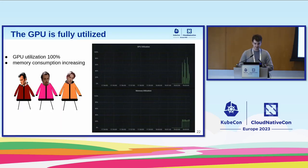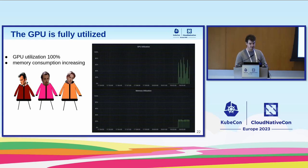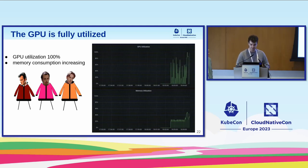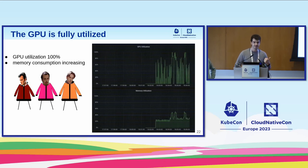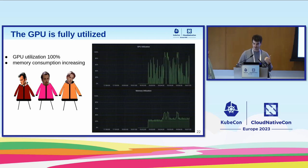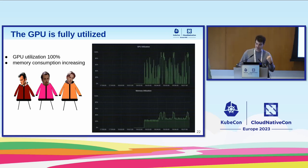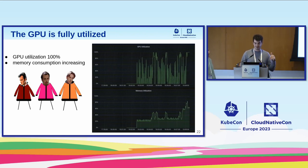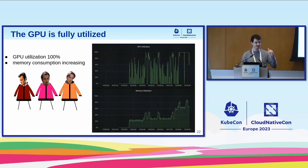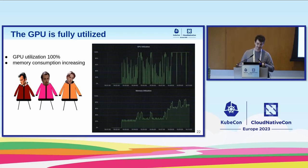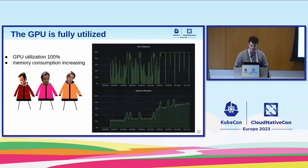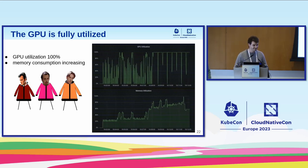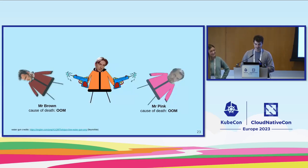Mr. Orange has some memory consumption problems. At some point he executes and just consumes memory, disregarding other users. The memory climbs up and up, and then at some point Mr. Pink goes to execute and dies because of that. This is really bad because we are offering our service to users, and we don't want users to complain that they have to redo their simulation.